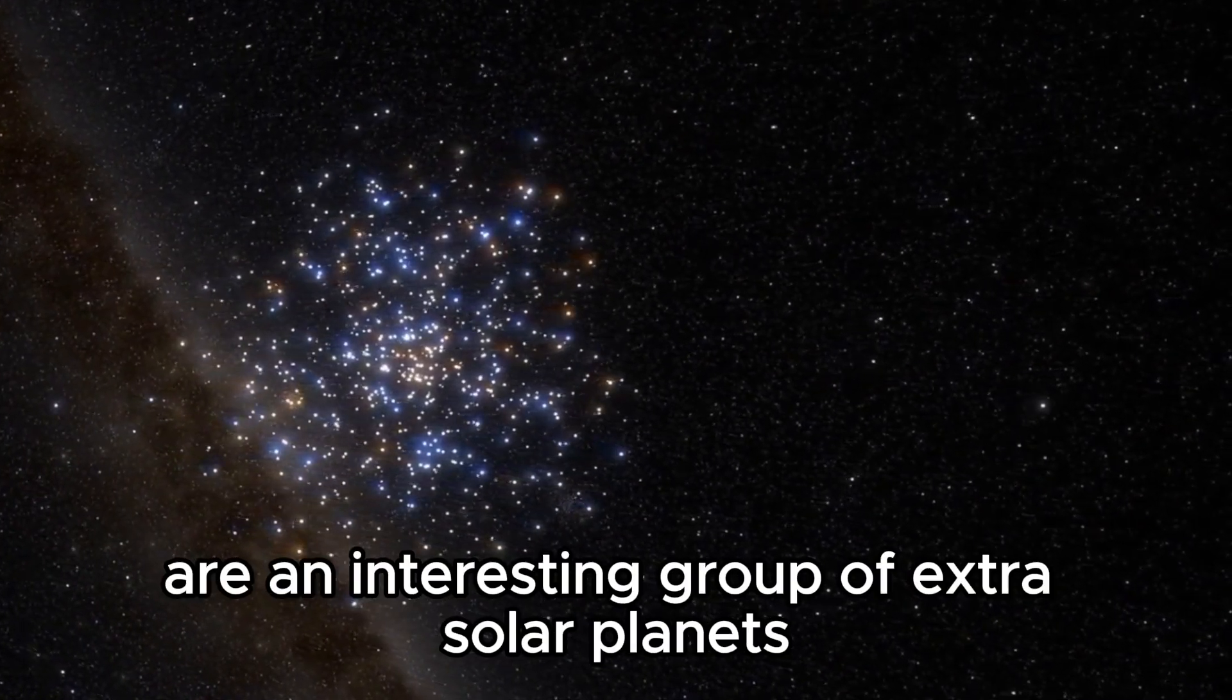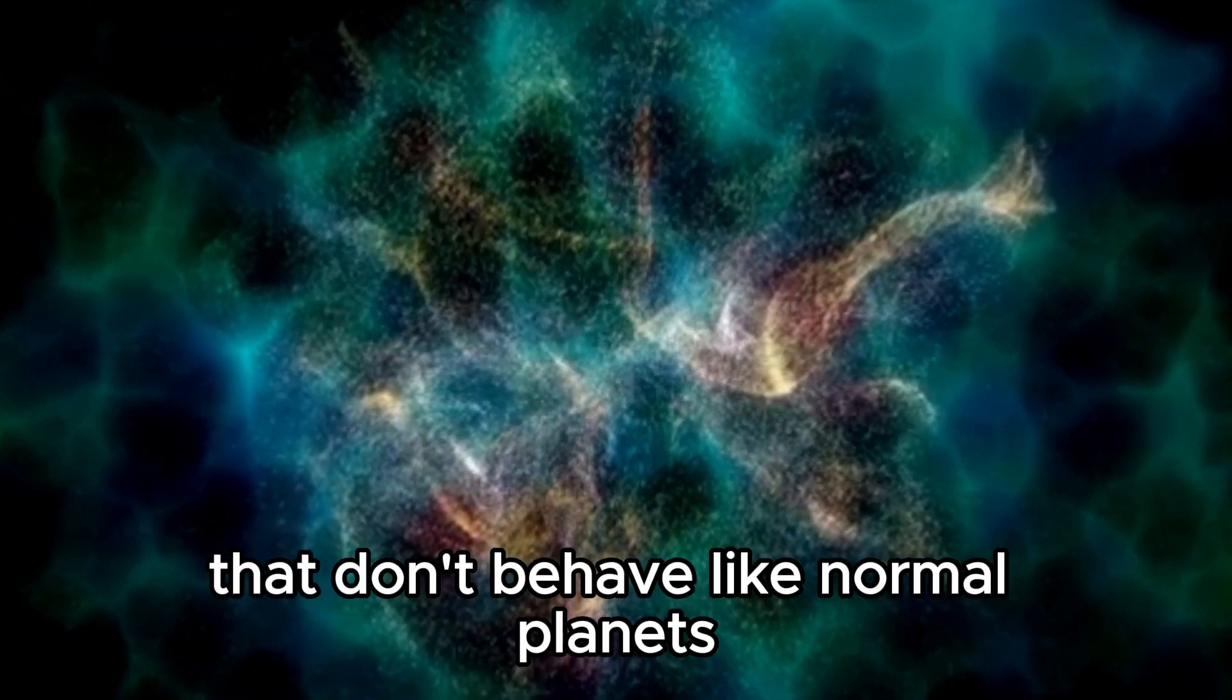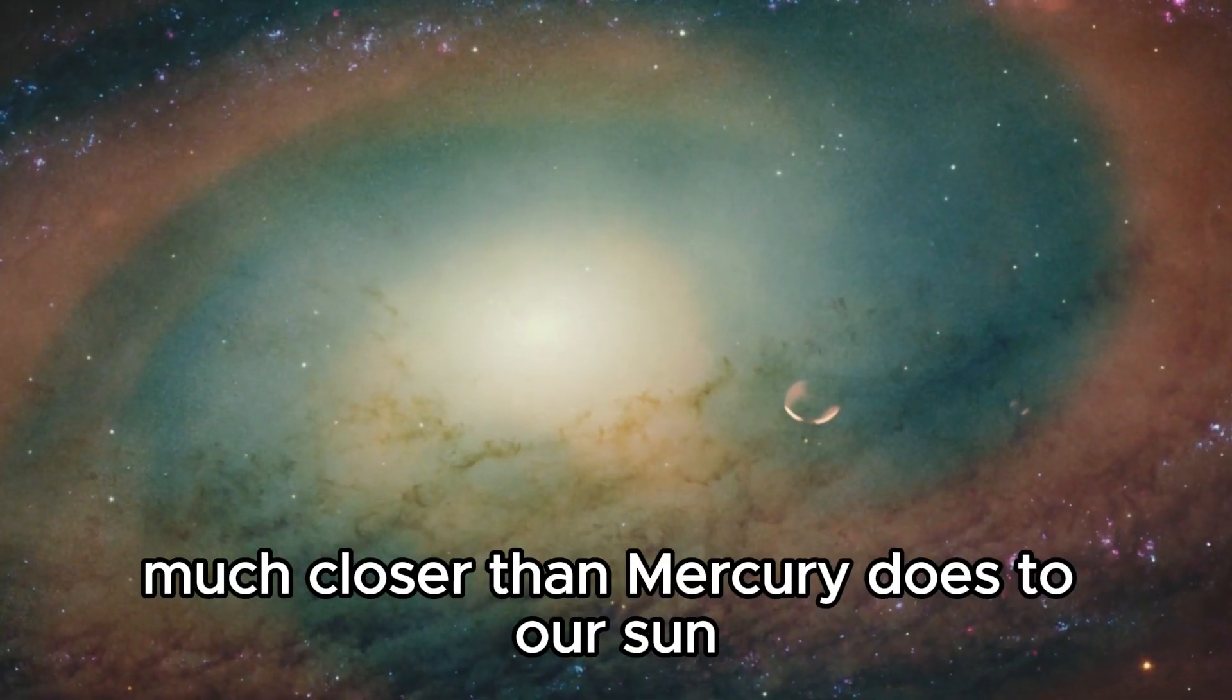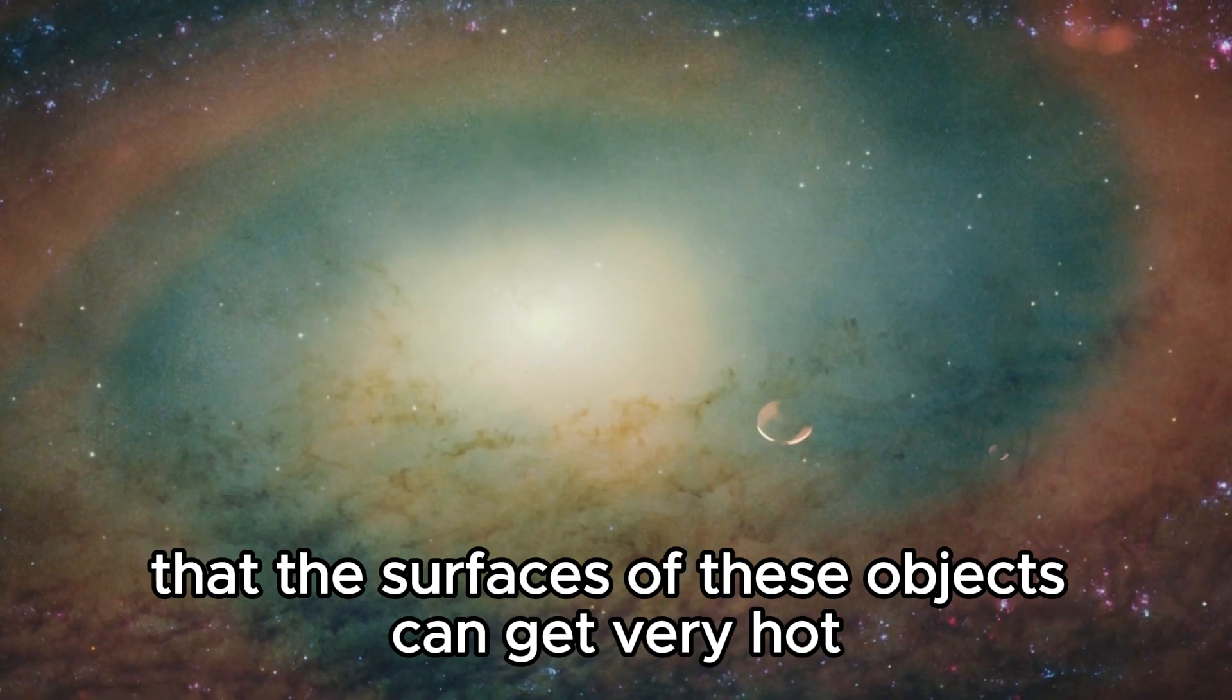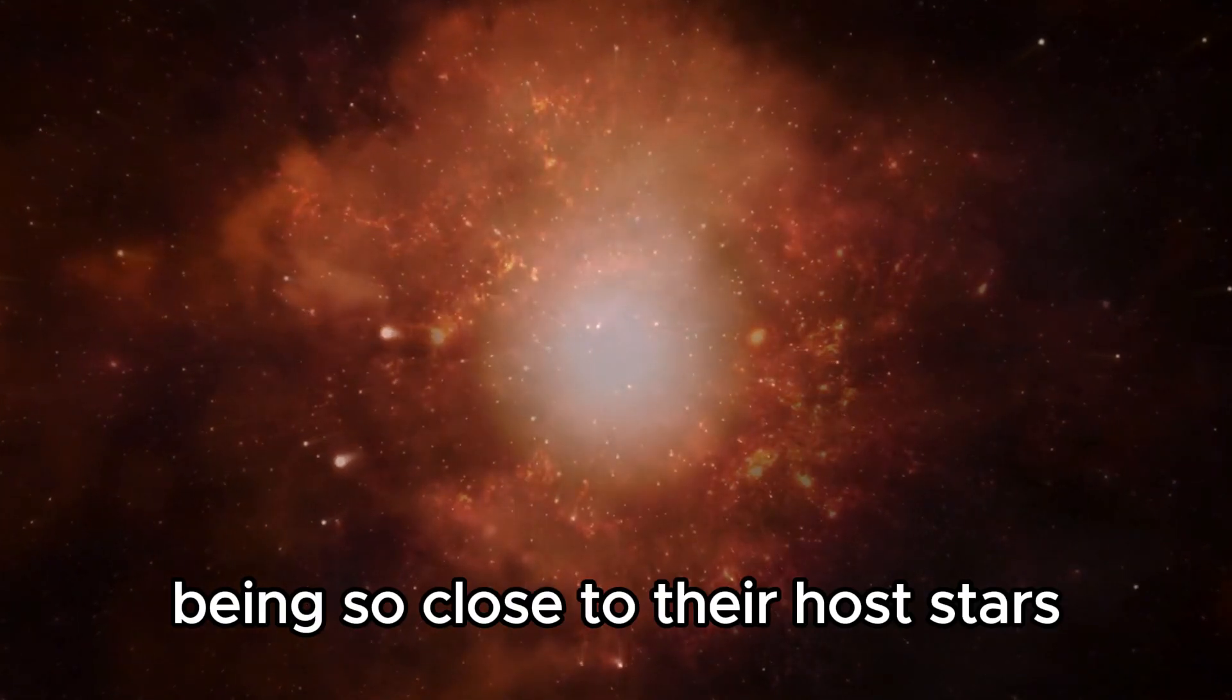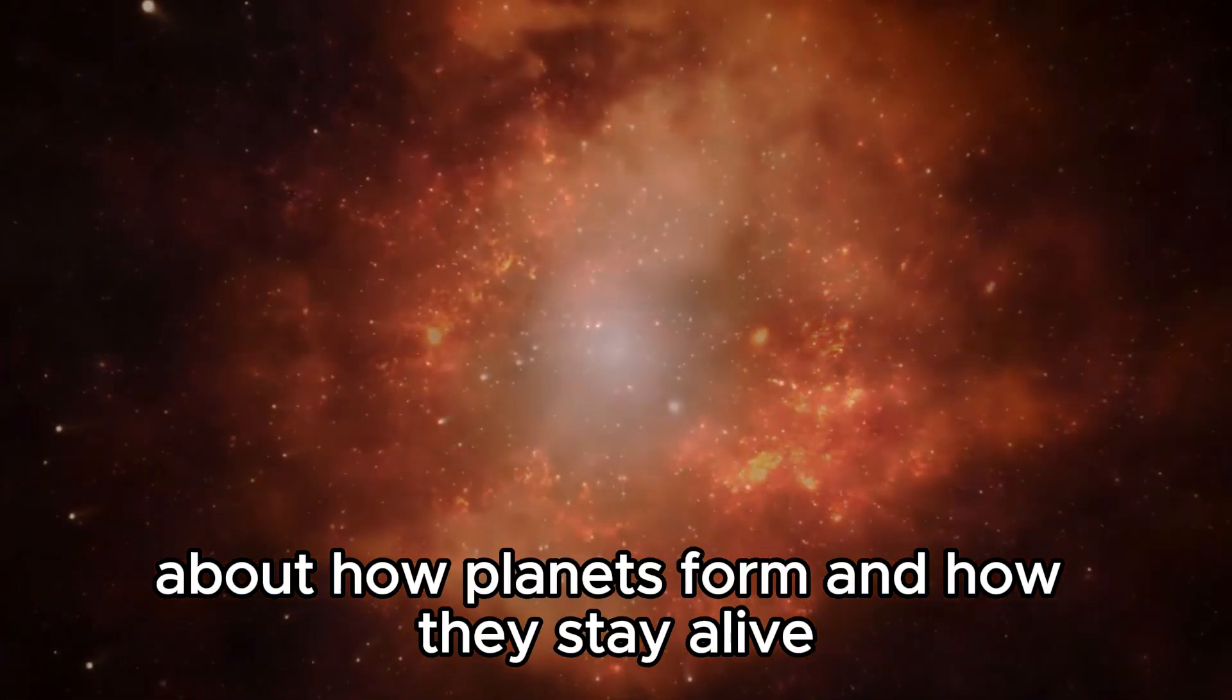Ultra-hot Neptunes are an interesting group of extrasolar planets that don't behave like normal planets. These objects in space circle very close to their stars, much closer than Mercury does to our Sun. This means that the surfaces of these objects can get very hot, over 1700 degrees Celsius or 3092 degrees Fahrenheit.